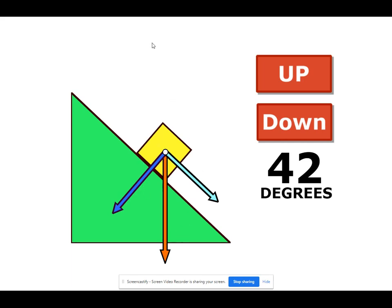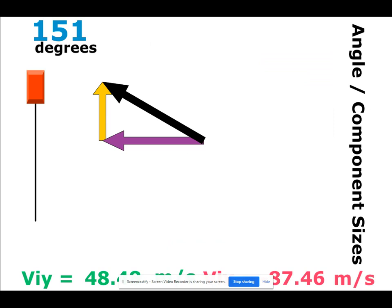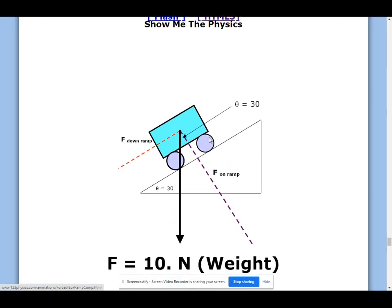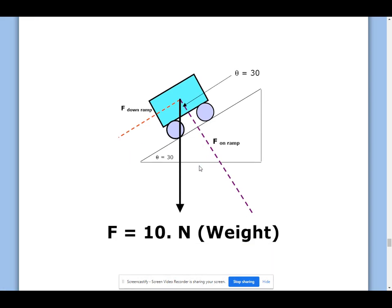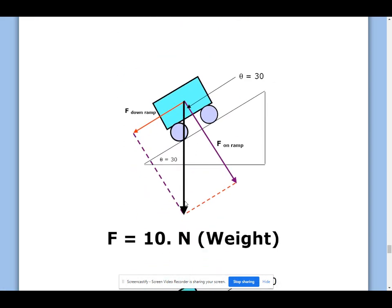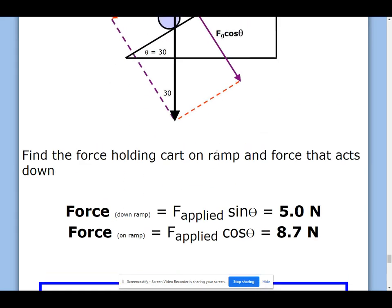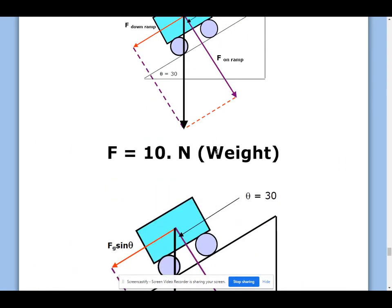Let's take another look at this in my notes. You have a cart on a ramp — it's not a box, but a cart. The black weight force causes the cart to press on the ramp, and that's represented by the perpendicular component. This same weight force causes the cart to want to go down the ramp — this is the parallel component. We'll leave it at that because it could get too complicated, so let's go back to the handout.